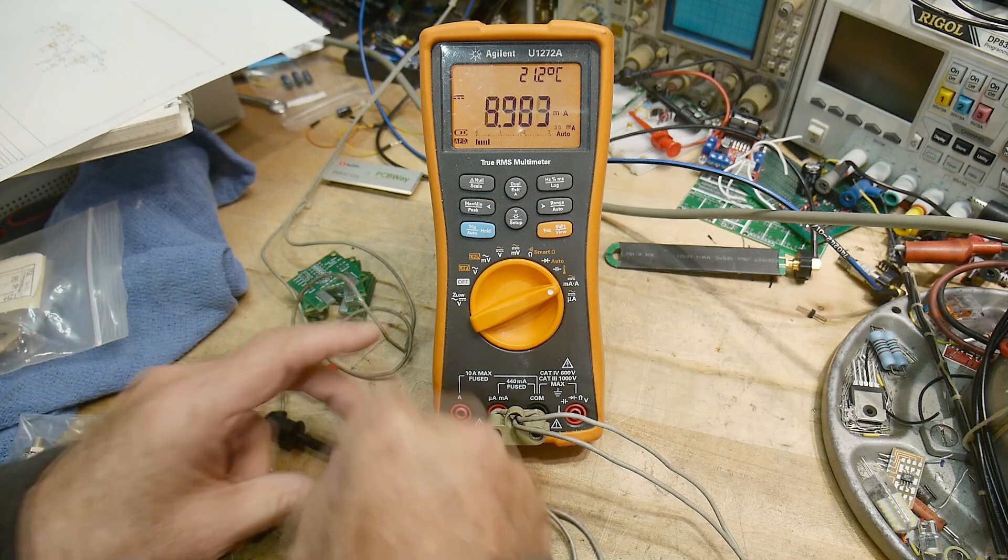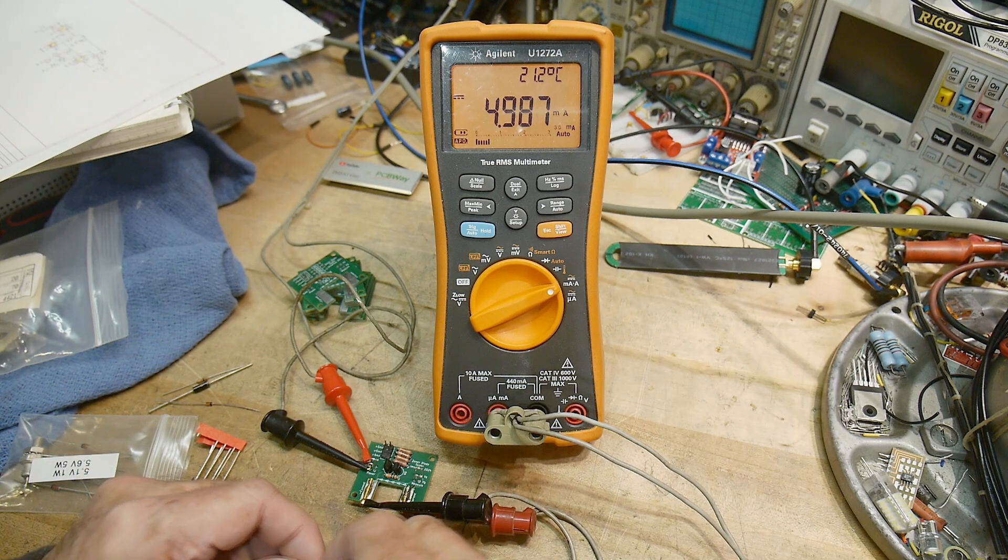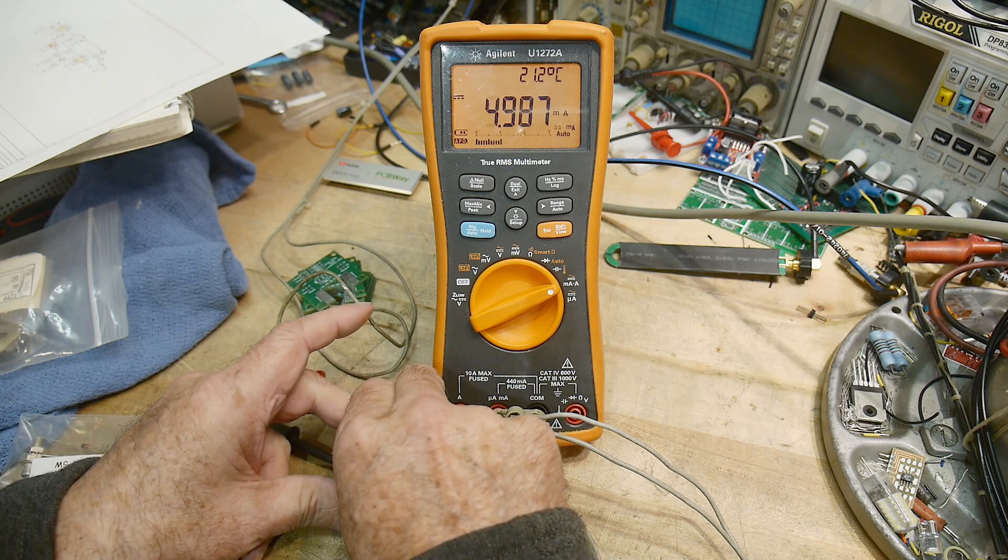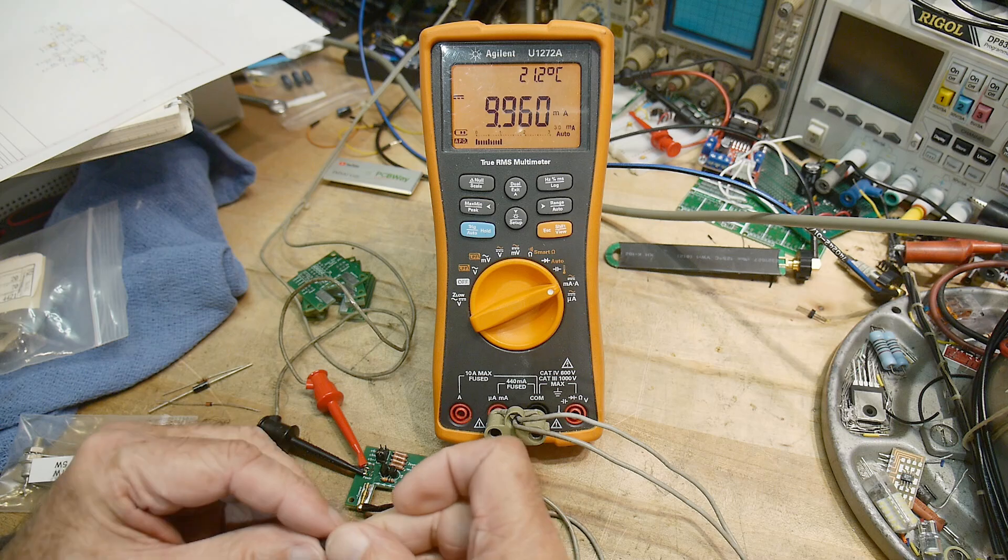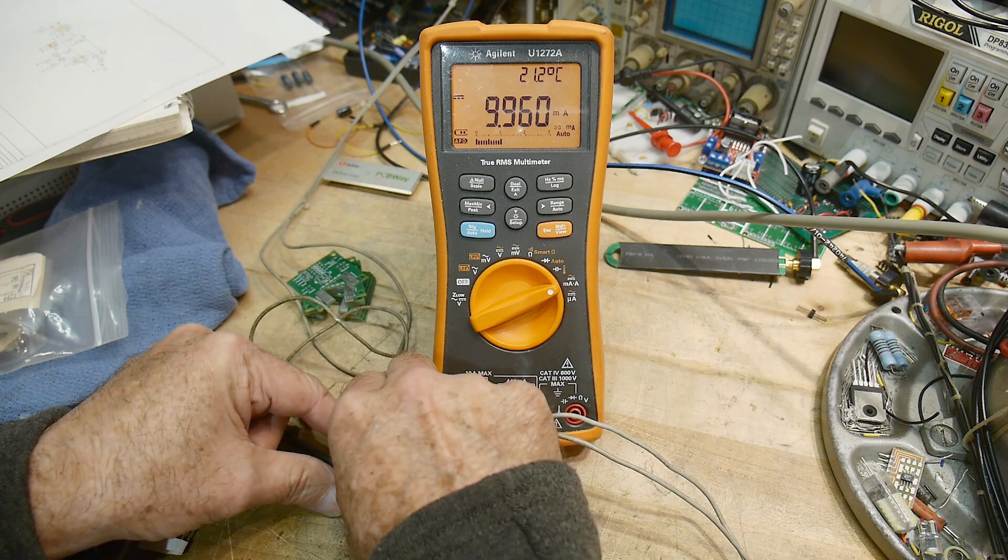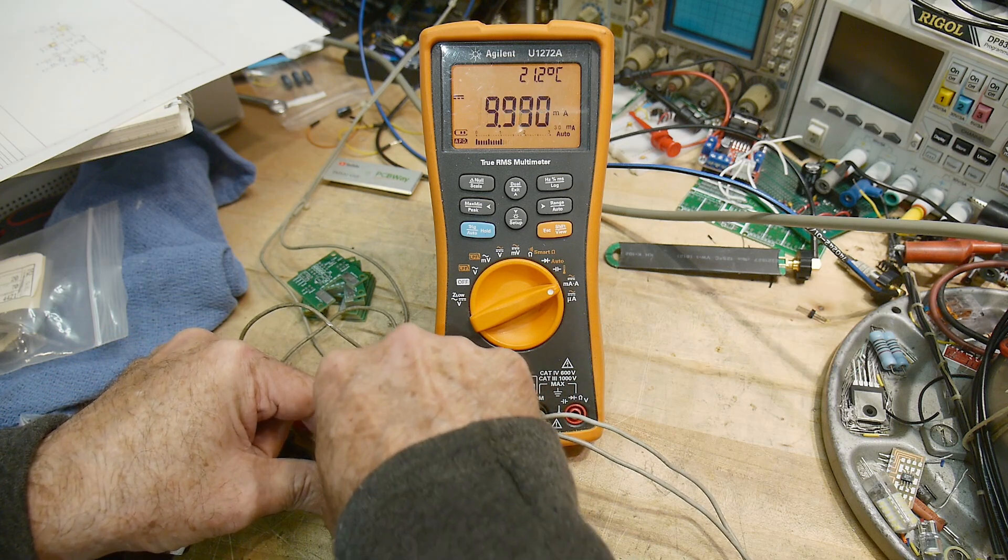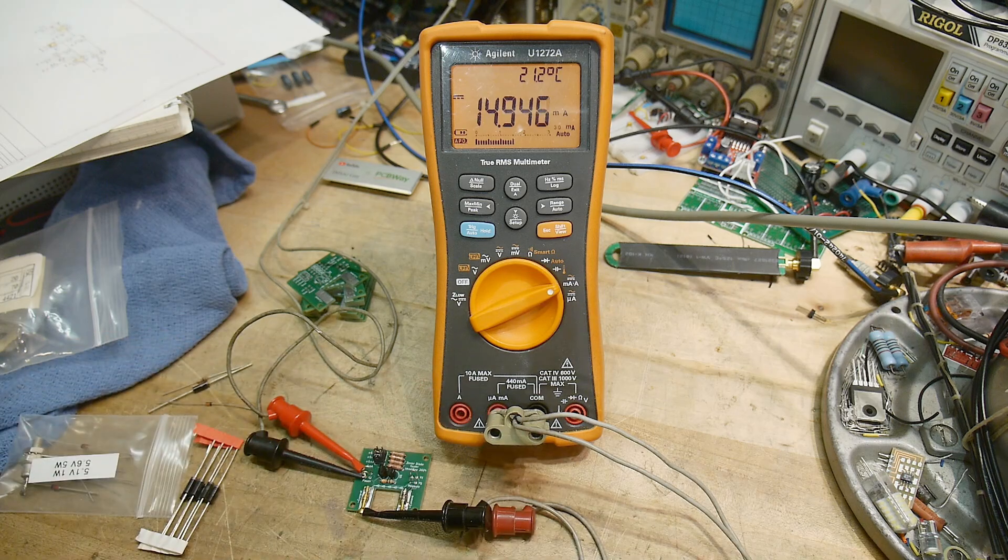If I remove the jumper, it goes down to 5. 4.98, 5 milliamps. And we find another jumper. This should go up to 15. Put the jumper on. 15. There we go. 15 milliamps.